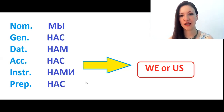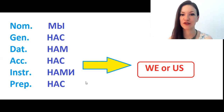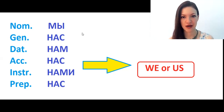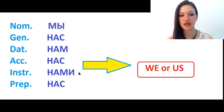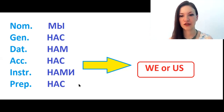First I'll read them, and after I will show you all of them in context so you can better understand Russian grammar. In the nominative: мы. Genitive: нас. Dative: нам. Accusative: нас. Instrumental: нами. Prepositional: нас. In English you have only two forms — 'we' or 'us' — but in Russian we have six forms.